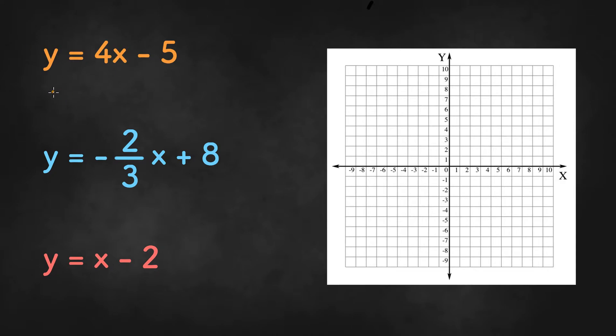We have three examples here and the first example says y equals 4x minus 5. So when we are trying to graph equations in slope intercept form, we're going to start off by plotting the y-intercept and then moving on to the slope.